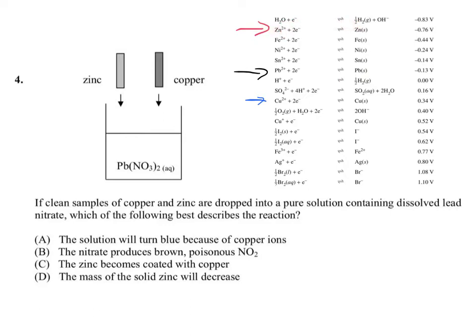Let's have a look at the question. The solution will turn blue because of copper ions - well no, copper is not going to do anything. The copper ions have already got their electrons, they're going to keep them. Nothing's going to happen to the copper. The nitrate produces brown poisonous NO2 - that's rubbish. The zinc becomes coated with copper - once again the copper is not going to do anything and there's no copper ions to be reduced.